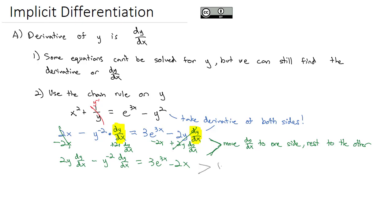And the reason we do that is we can factor out the dy/dx. In other words, we take this common factor of dy/dx and factor it out, leaving behind 2y minus y to the negative 2. And on the other side, we have 3e to the 3x minus 2x. Our whole goal was to get that dy/dx alone and solve for it. We can do that really quick by dividing by the 2y minus y to the negative 2 on both sides.